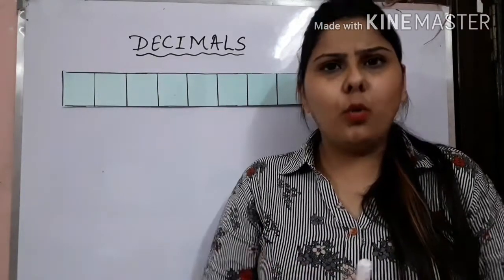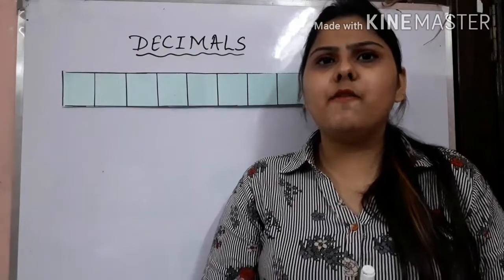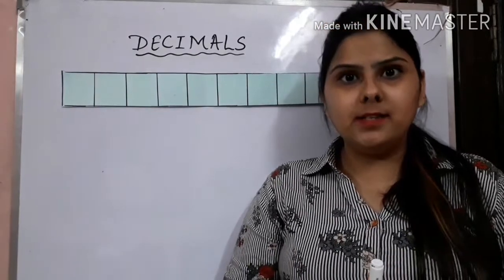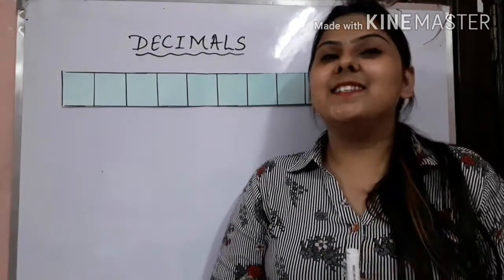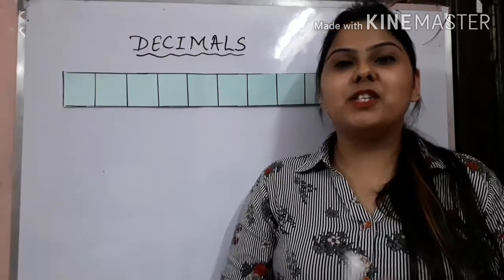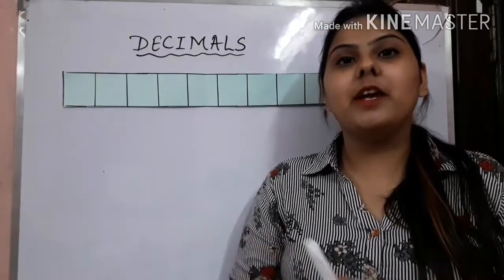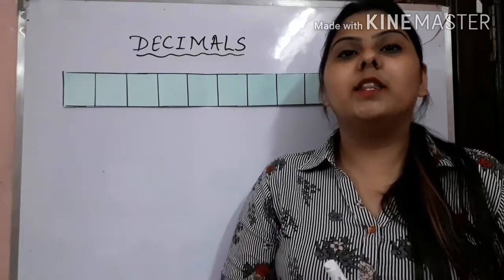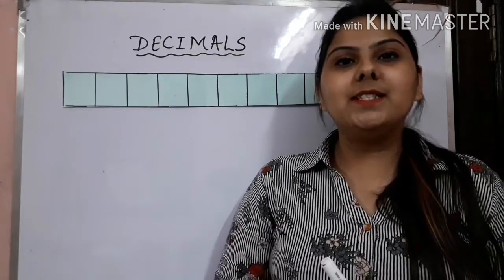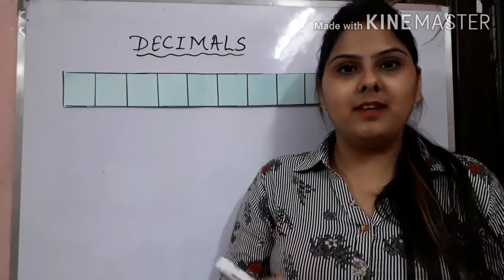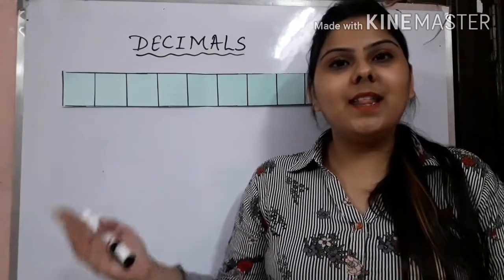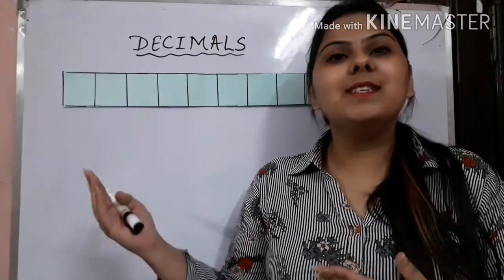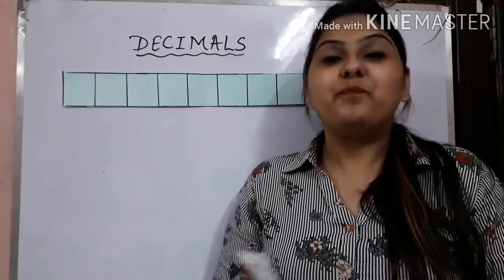Do you know what a decimal fraction is? A decimal fraction is a fraction in which the denominators are 10, 100, 1000, 10,000 and so on.